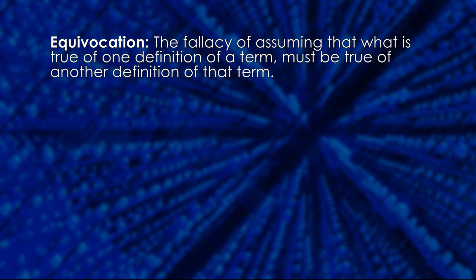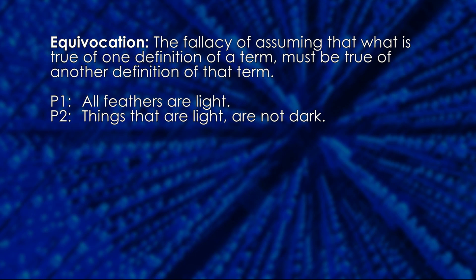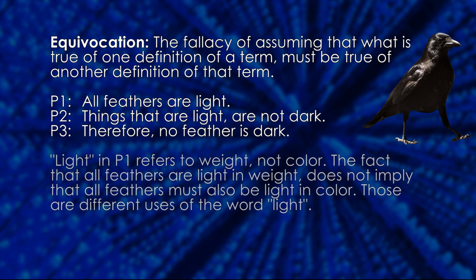The Fallacy of Equivocation is committed when what is true for one definition of a term is assumed to apply to another definition of that term. The textbook example is: premise 1, all feathers are light; premise 2, things that are light are not dark; therefore no feather is dark. The problem is that light in premise 1 refers to weight, not color. It is true that something light in color is not dark, so it is assumed the same is true for things light in weight. What is true for one definition of light is assumed to be true for another definition of light as well.